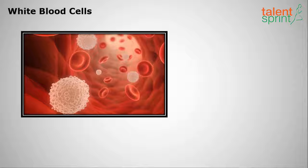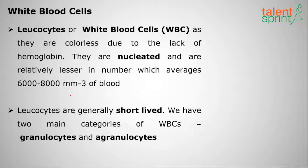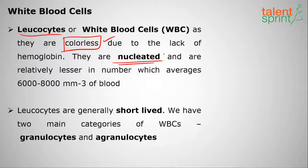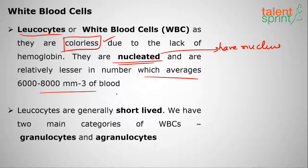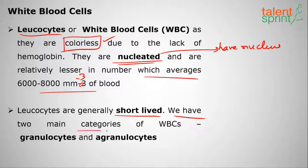Moving on to the third component of blood: white blood cells, or WBCs. They are also called leukocytes. WBCs are colorless — unlike red blood cells, which have red color because of hemoglobin. White blood cells are nucleated, meaning they have a nucleus, and are relatively fewer in number, averaging 6,000 to 8,000 per millimeter cube of blood.